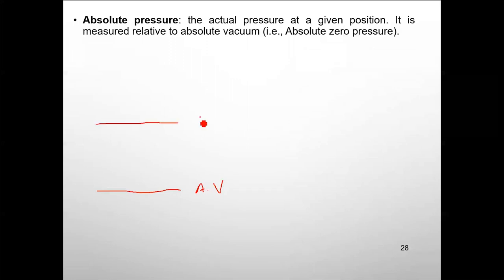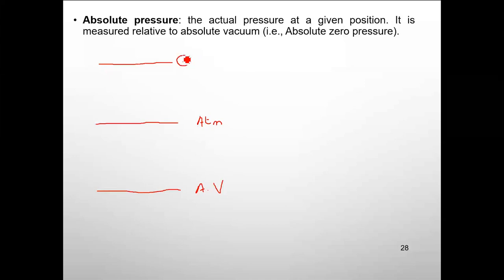Atmospheric pressure is referred to as ATM, and there is a third level — this third level could be above or below atmospheric pressure. For the condition where pressure is greater than atmospheric pressure, let's call it pressure one. Absolute pressure at that location is measured from the absolute vacuum reference up to that point.